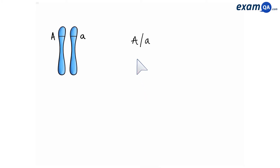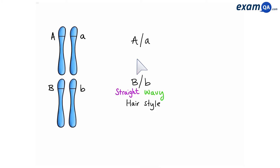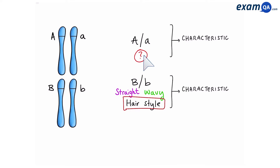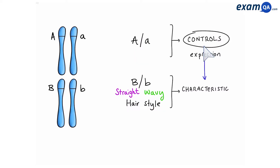However, here we have gene A again and gene B. We can see that gene B still codes for a characteristic — hairstyle — but we haven't been told what gene A codes for. It doesn't code for a characteristic at all; gene A in fact controls the expression of gene B. This is an example of epistasis.